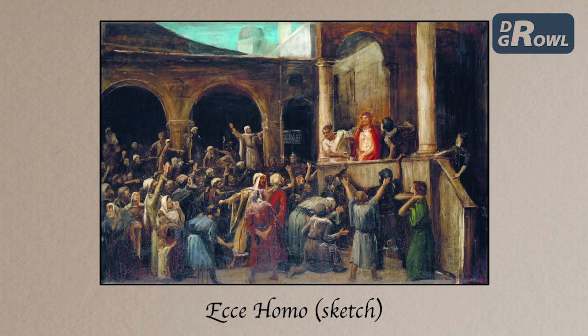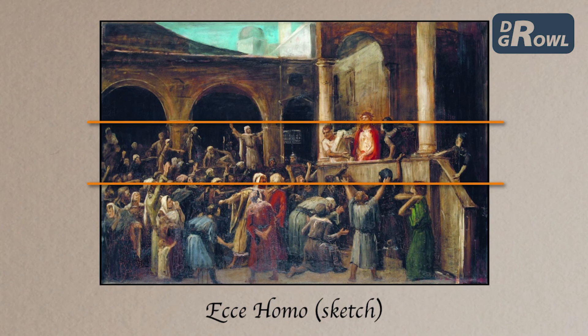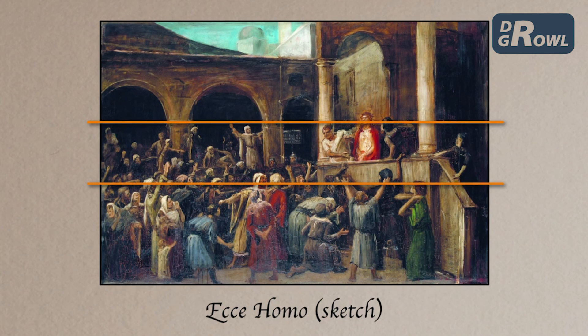A thoughtful application of the golden section can be found in the sketch and painting of Ecce Homo by Mihai Munkacchi. The line of the horizon is placed on the line of the lower golden section, and the eye level of Christ on the upper golden section in the sketch. However, in the finished work of art, the arrangement is the one used in the Renaissance era.